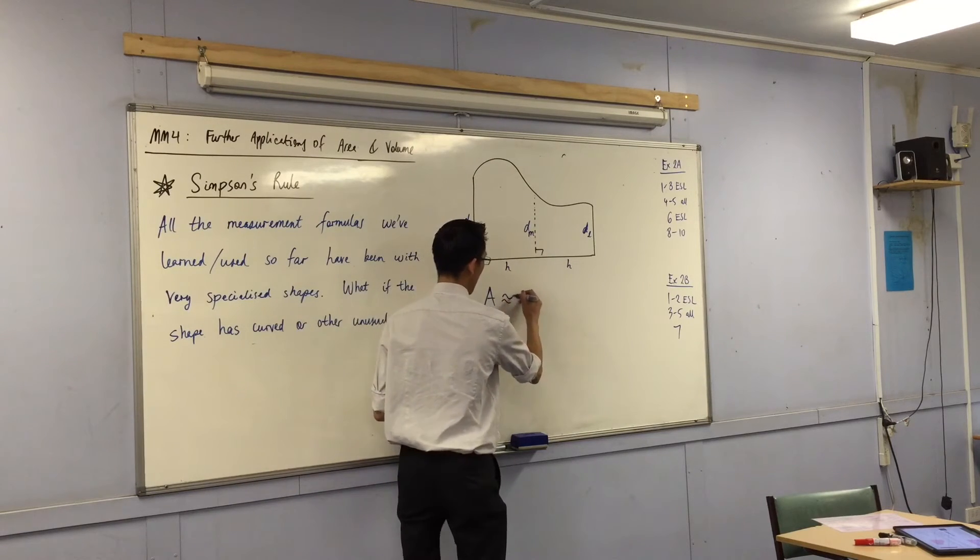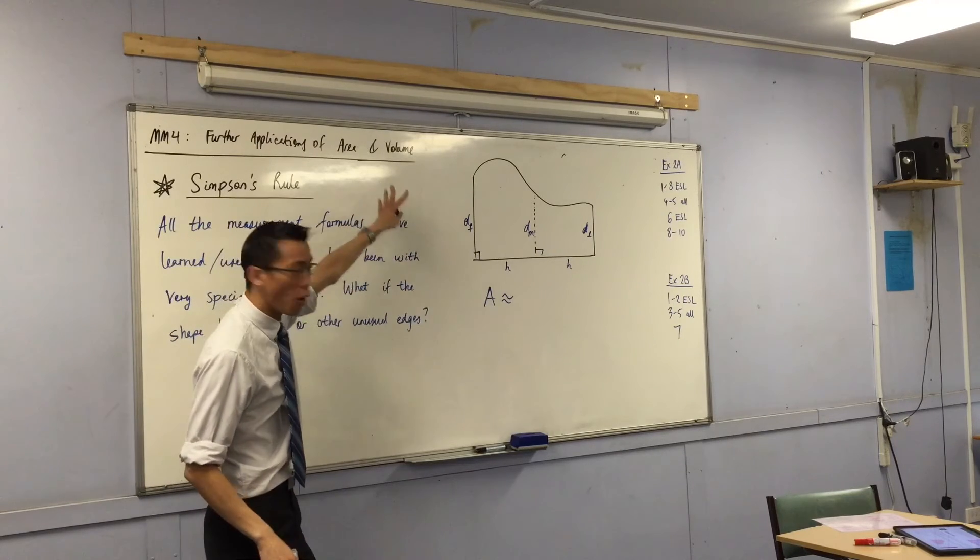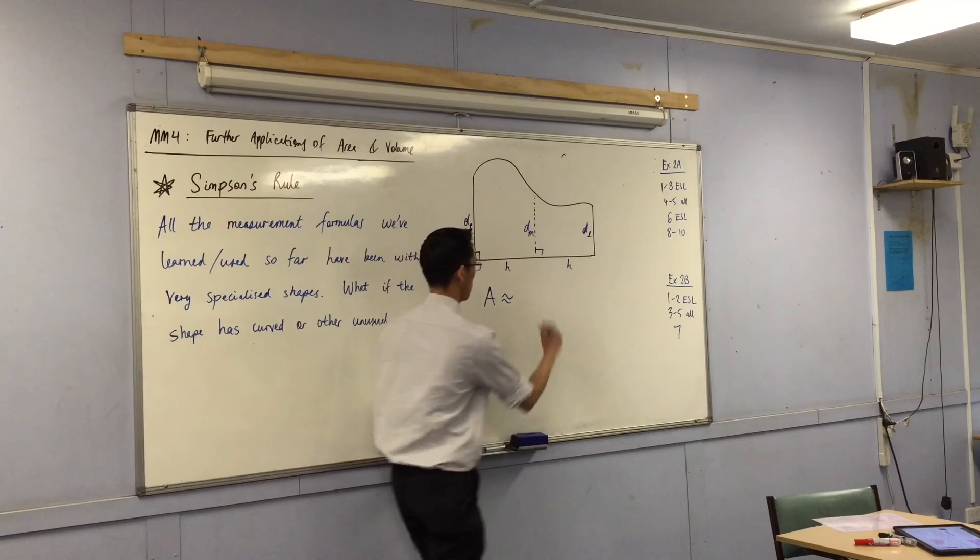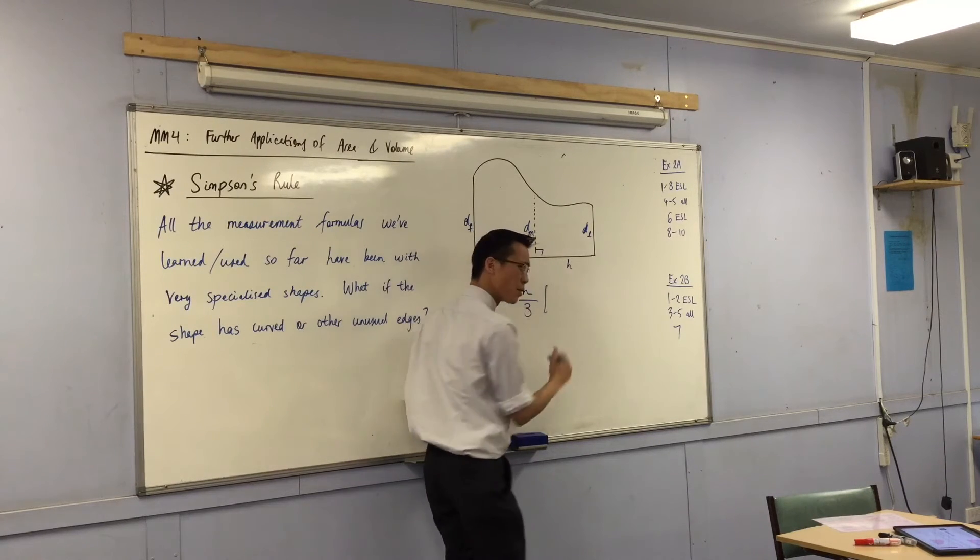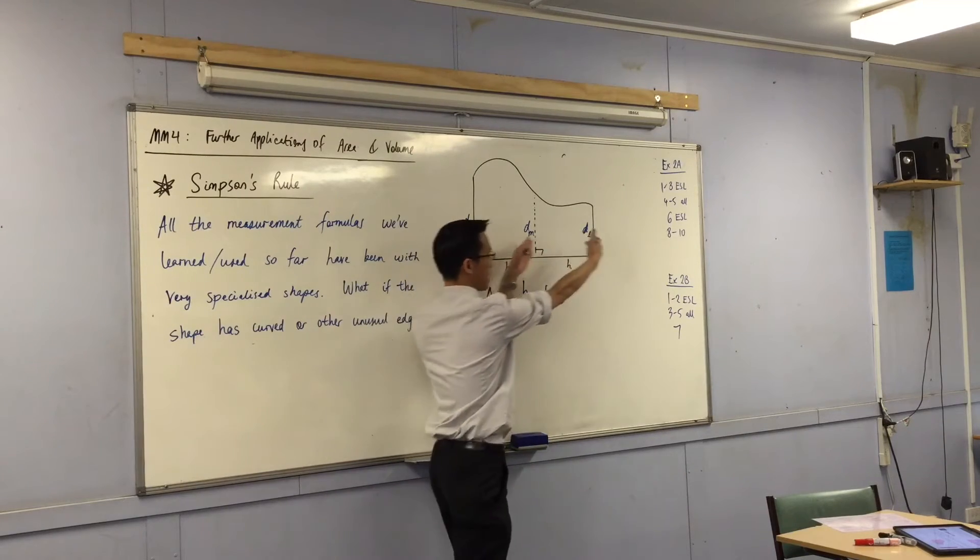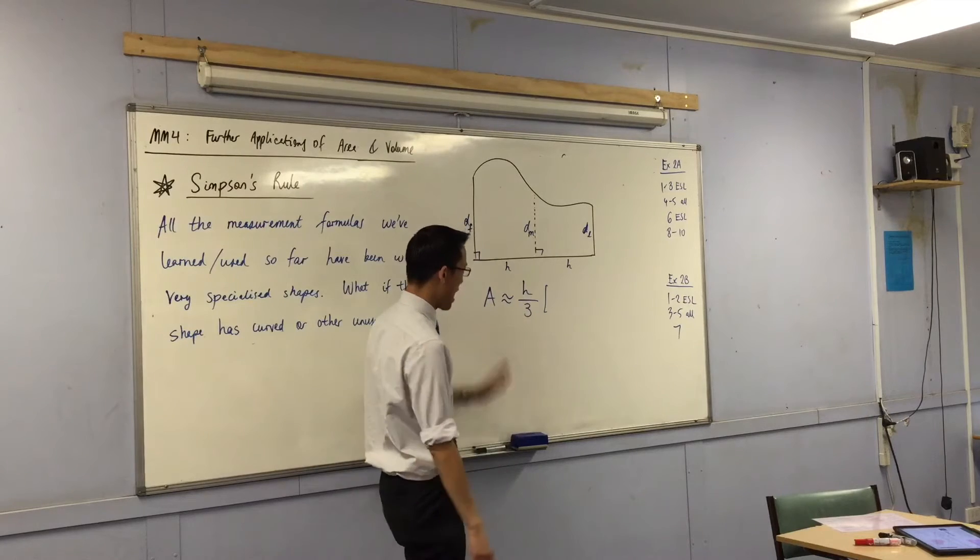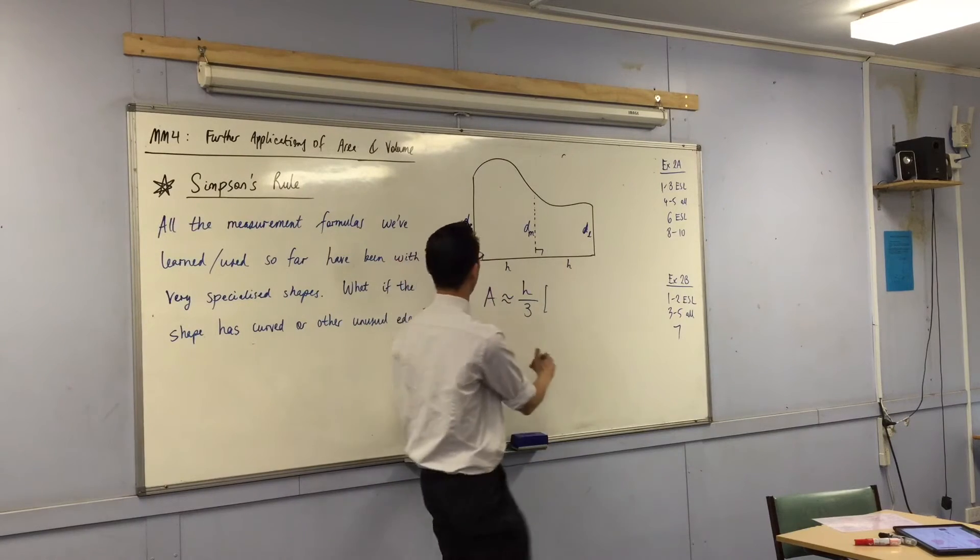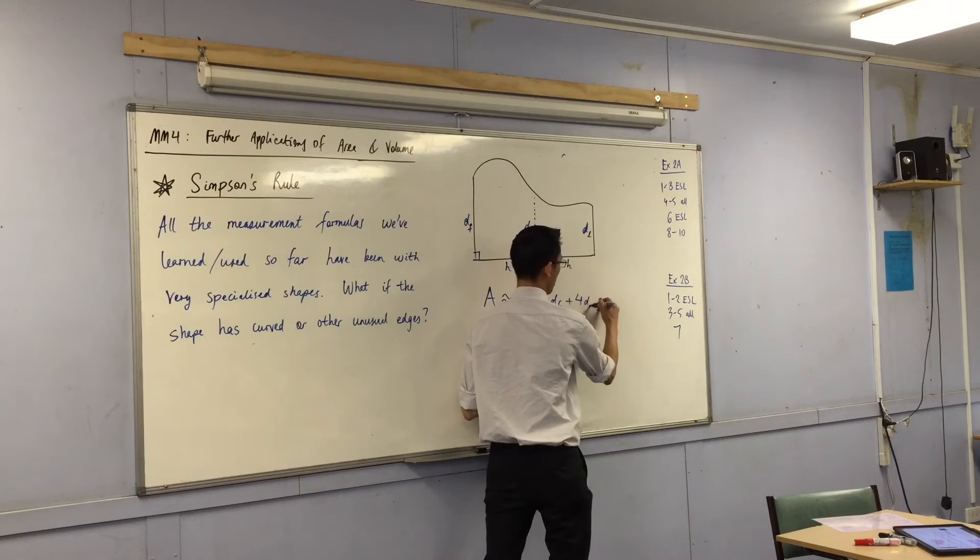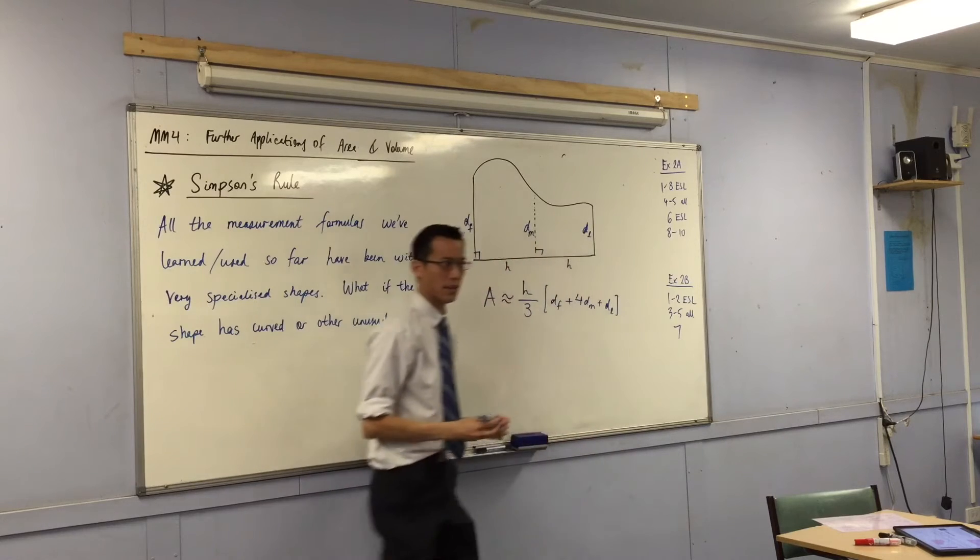If I'm working out an area, and I have all these four measurements on here, it will be approximately equal to, here's the rule, it's a little bit awkward, but you take whatever this interval distance is here, and it's the same each time, divided by three, and then you multiply it by this weird thing here. The first distance, four lots of the middle distance, and the last distance.